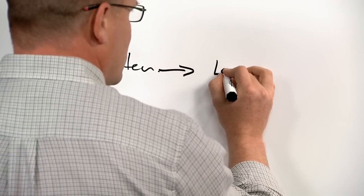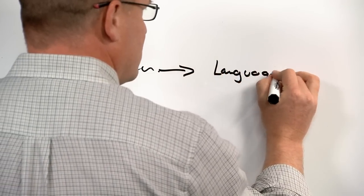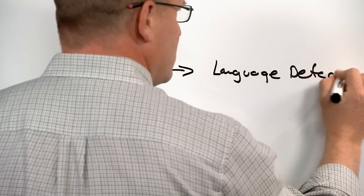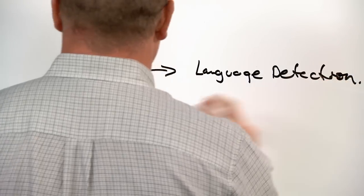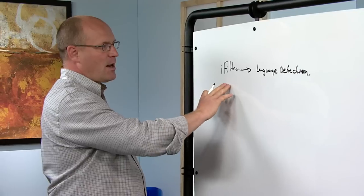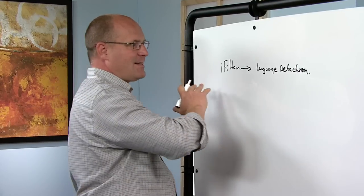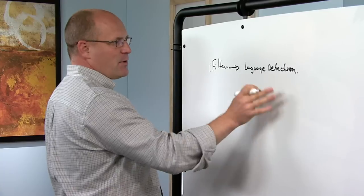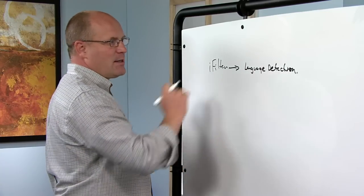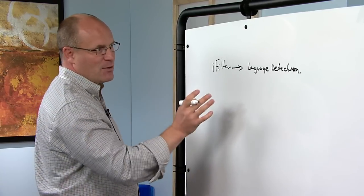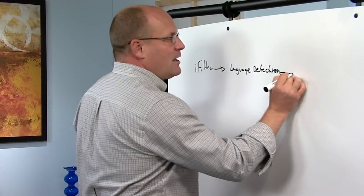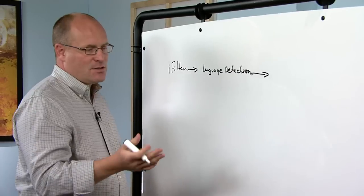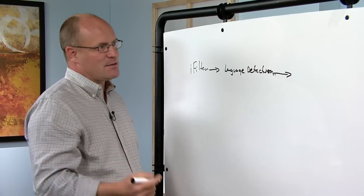Then you do language detection. The iFilter understands the document and can send the language stripped of all the non-language parts to the next step in a standard format. Then we have to do language detection on it. And then after you do language detection, then there's an important thing that it does. It's called word breaking.